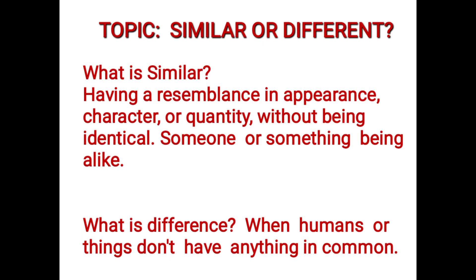With the word similar, you can be able to differentiate; the difference itself — do we get that? When humans or things do not have anything in common, when they are not similar. You can have white and you have black — they are two different things. For example, Peniel is fair and Chisarm is dark, Henry is chocolate and Amanda is fair.